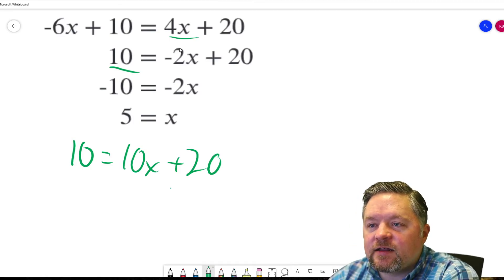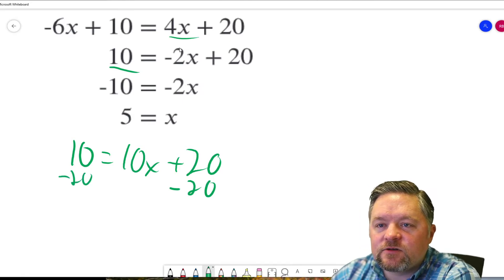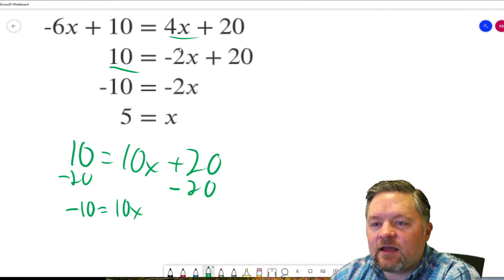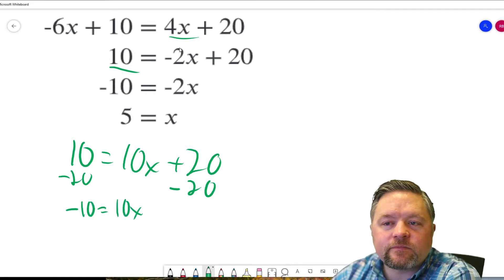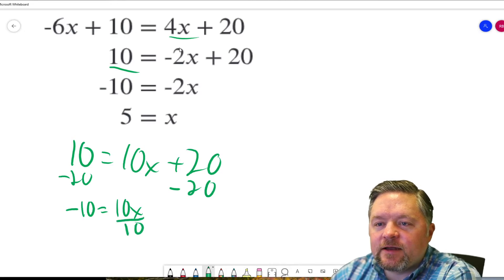How do we get rid of adding 20? We subtract 20. Do it to one side. Do it to the other. 10 subtract 20 is negative 10 equals 10x. Divide each side by 10.